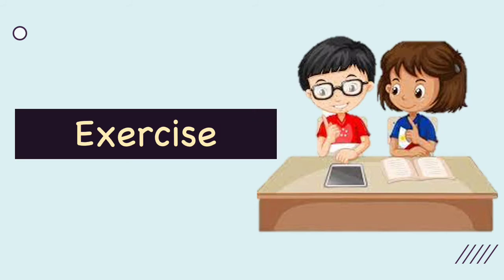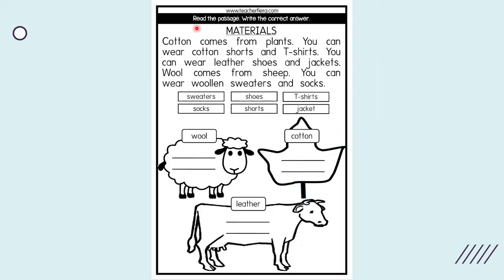Now, let's answer some questions. Task 1: read the passage and write the correct answer. You can choose the answer from here. For example, wool. One of the answers is sweaters.